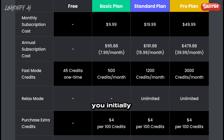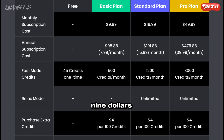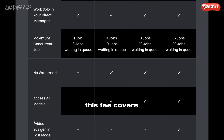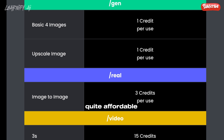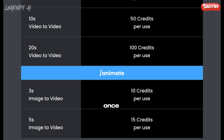Regarding the cost, you initially receive 45 free credits as a one-time offer. For continued use, you have the option of selecting a paid subscription. The basic plan costs $9.99 per month for 500 credits, which is quite reasonable. This fee covers the generation of both images and videos. Creating images is quite affordable, but generating videos incurs a higher cost, so it's wise not to use up all your credits at once.